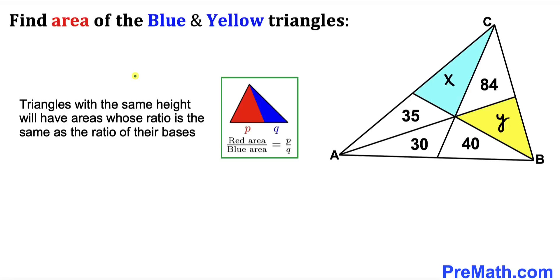Now let's recall this crucial concept: triangles with the same height will have areas whose ratio is the same as the ratio of their bases. In other words, the area of the red triangle divided by the area of the blue triangle equals the base of the red triangle divided by the base of the blue triangle.